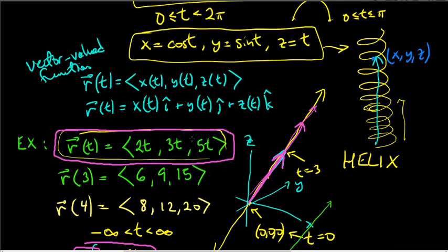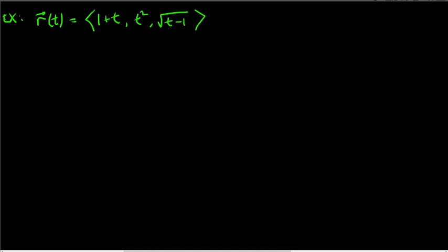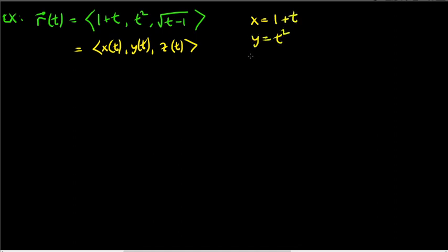In this video we're just going to study the properties of these vector-valued functions. Here's another example with three components: x = 1 + t, y = t², z = √(t − 1). These are the x, y, and z components of the vector. This traces out some path in space — clearly not a line since y = t² is not linear.